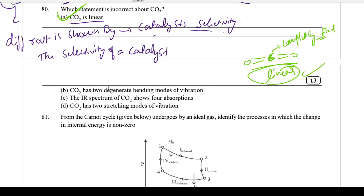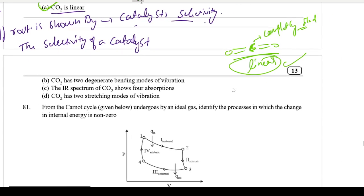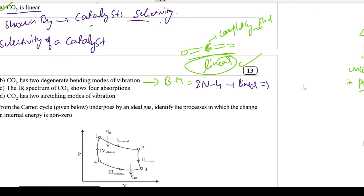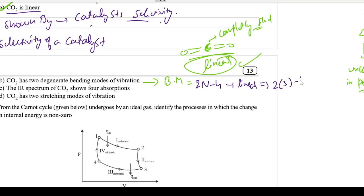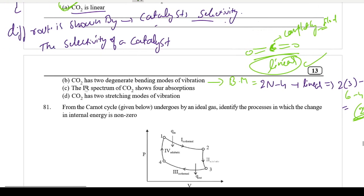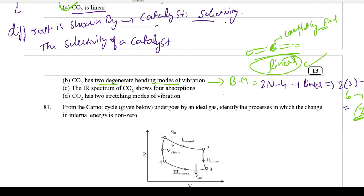Second statement: CO₂ has 2 degenerate bending modes of vibration. Using the formula for linear molecules: bending modes = 2n − 4, where n = number of atoms = 3. So 2(3) − 4 = 2. This statement is also correct.